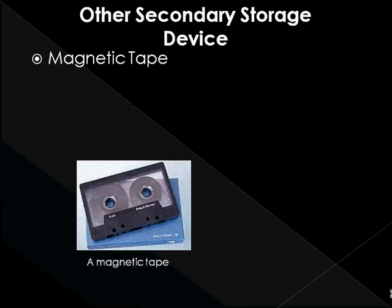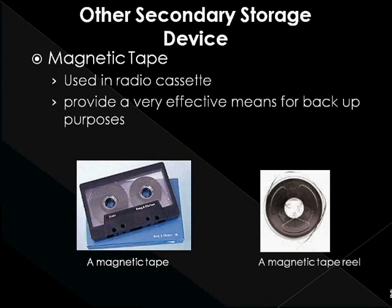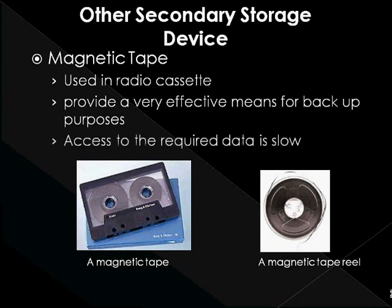Magnetic tapes have existed for a long time. They are very similar to the tapes used in radio cassette players and video recorders, and can still be found in video camcorders. Magnetic tapes provide a very effective means for backup of large amounts of data, like 5GB. However, the main limitation is that data is stored in a sequential mode — you may have to wait for several inches of tape to play before reaching the data of interest, making access to the required data slow.